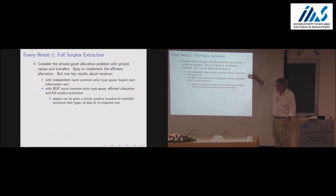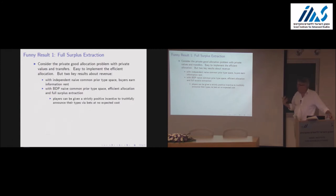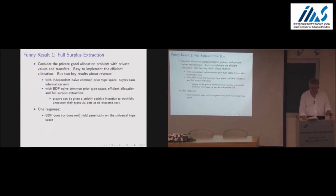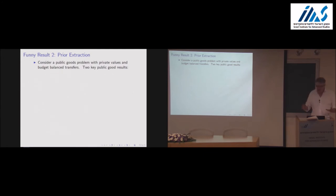This apparently paradoxical full surplus extraction result comes about because we're assuming common knowledge that we're living in a world that consists only of naive common-prior type spaces. The belief-determines-preferences assumption seems a little wacky precisely because we've built in too-strong common knowledge assumptions that yield this funny conclusion. The right response is to think about richer type spaces.